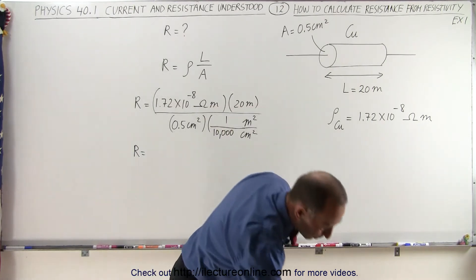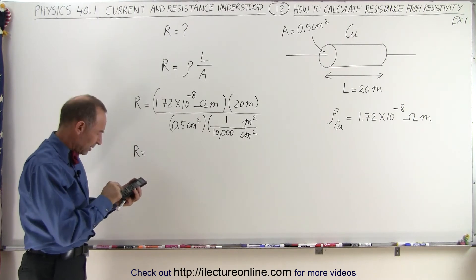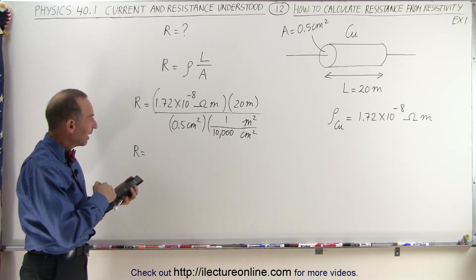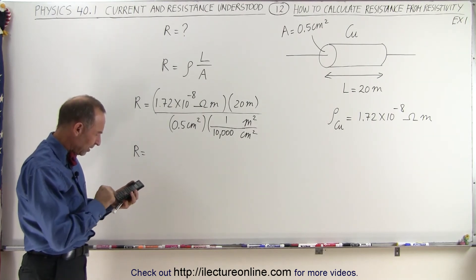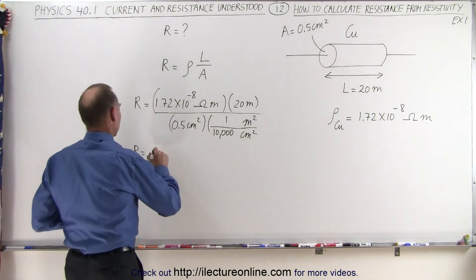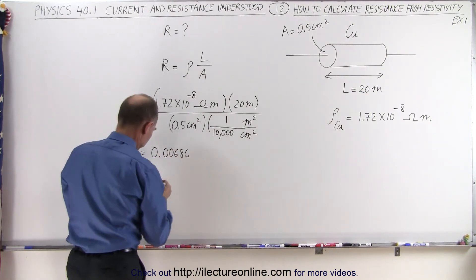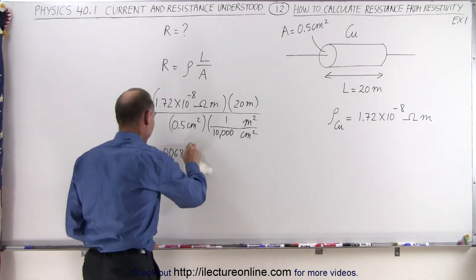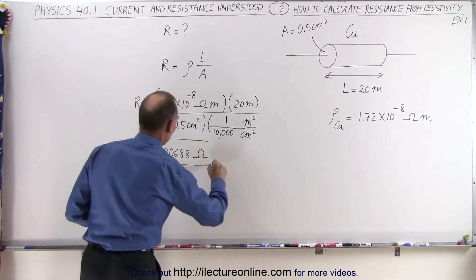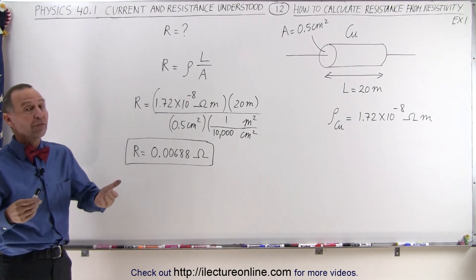Let's see what that's equal to. We have 1.72e-8 times 20 divided by 0.5, then multiplied by 10,000, which gives us a resistance of 0.00688 ohms — about 7 one-thousandths of an ohm.